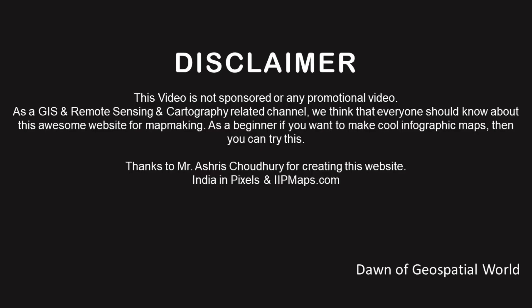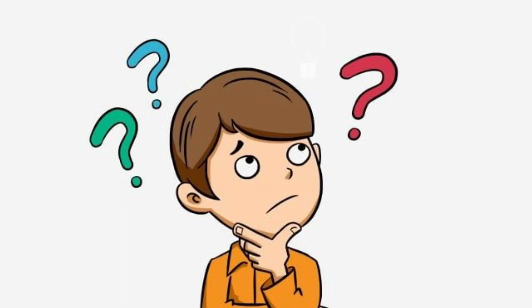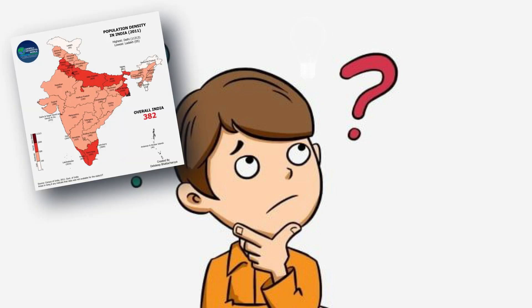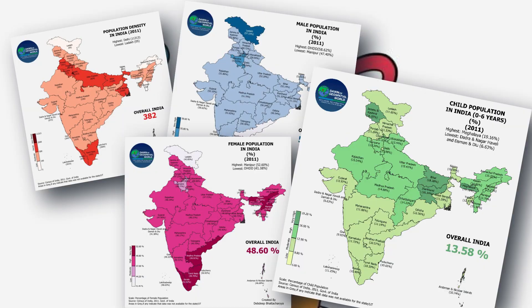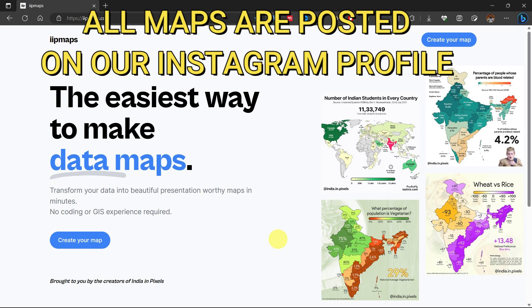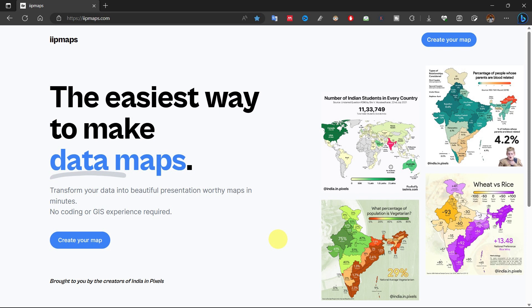Hello and welcome to Dawn of Geospatial World. Sometimes I think that if I have data to represent in maps but don't have the knowledge of map making, then how could I make some infographic maps. For this problem I am bringing a solution. Welcome to IIP Maps by India in Pixels — a website where you can make infographic maps without the knowledge of GIS and cartography.